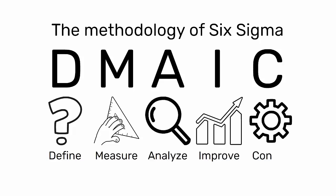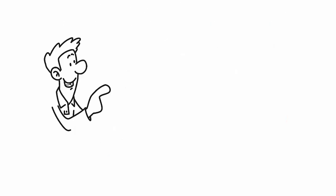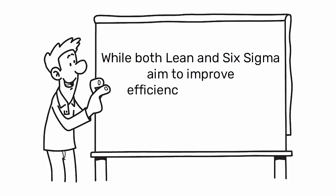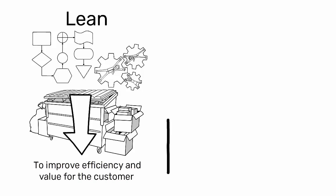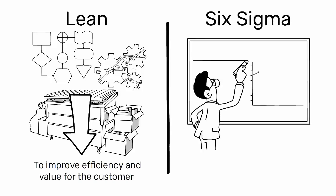While both Lean and Six Sigma aim to improve efficiency and quality, they differ in their approach. Lean focuses on process flow and waste elimination to improve efficiency and value for the customer, while Six Sigma focuses on reducing process variation to improve quality and consistency.